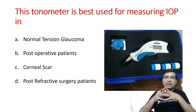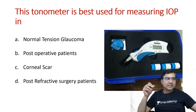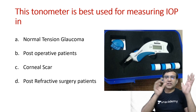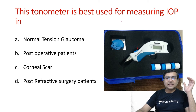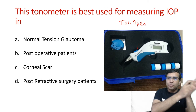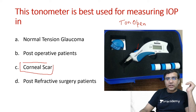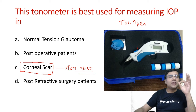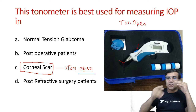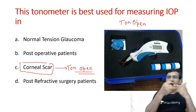This tonometer is best used for measuring intraocular pressure in which case — normal tension glaucoma, post-operative patients, corneal scar, or post-refractive surgery? This instrument shown is a tono-pen, which is best used for measuring IOP in patients with a corneal scar. Its pointed tip can be placed on any clear area of the cornea, making it ideal when the cornea is not uniformly clear.